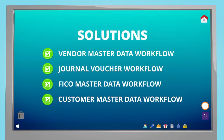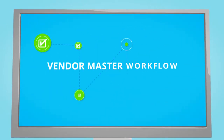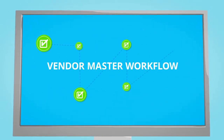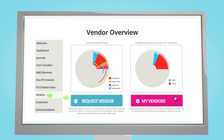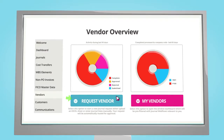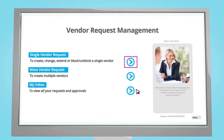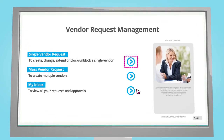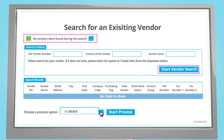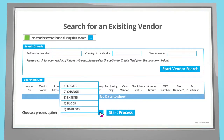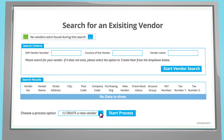Consider vendor master workflow as an example. Requesters can start a new request from the launch pad or your intranet. Different types of vendor requests can be started. Requesters can directly search SAP to find the vendor they wish to change, extend, block, or unblock. To prevent duplication of data, a vendor search must also happen before a new vendor can be requested.